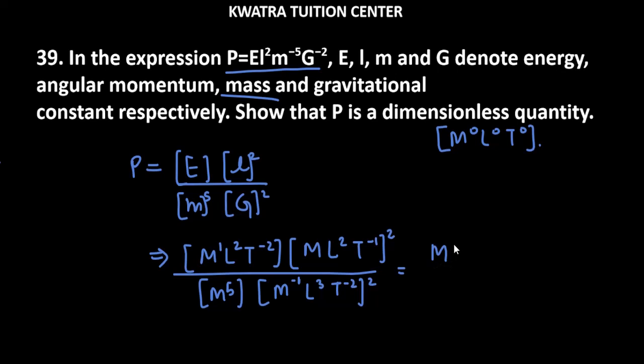Now let us solve it and see if P is dimensionless. In the numerator, we have M¹ times M² which gives M³. L² times L⁴ gives L⁶. T⁻² times T⁻² gives T⁻⁴.